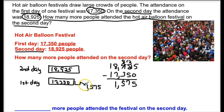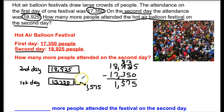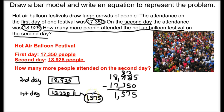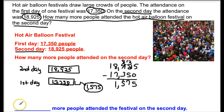That was the missing value. These two values together — the first day and this missing part — give us the total of 18,925 people that attended on the second day. So 1,575 more people attended the festival on the second day.